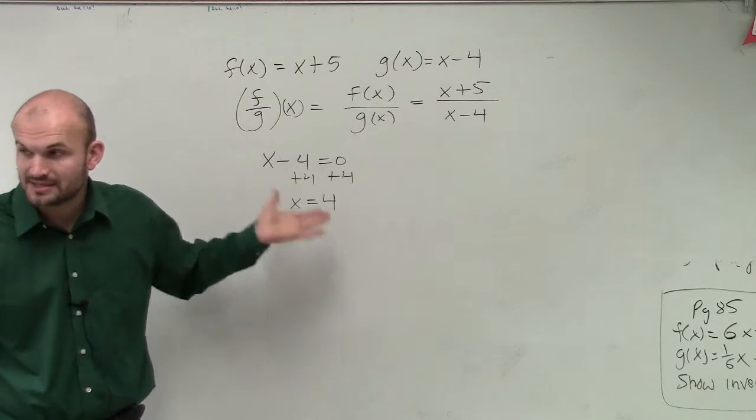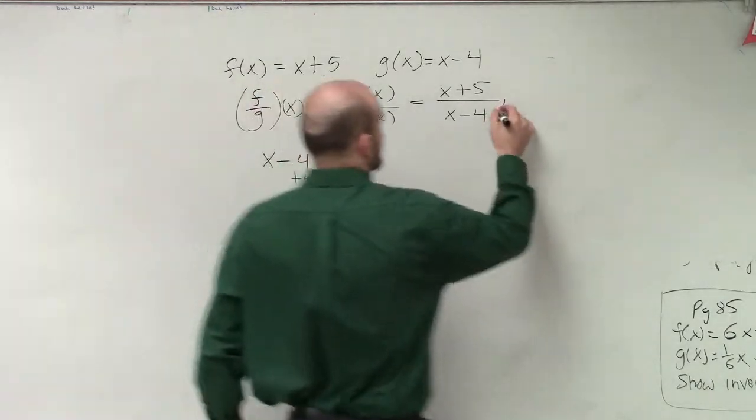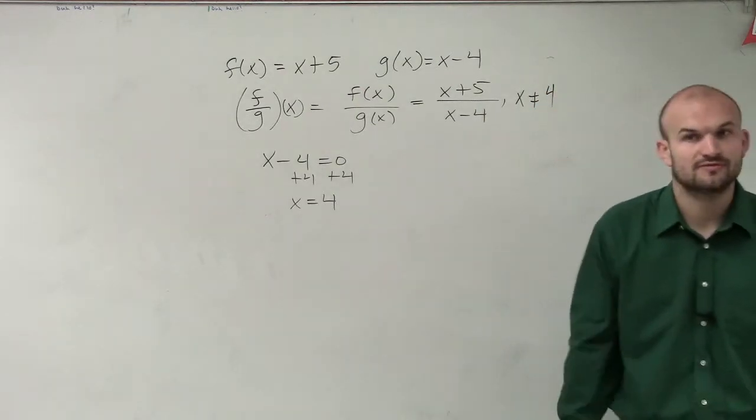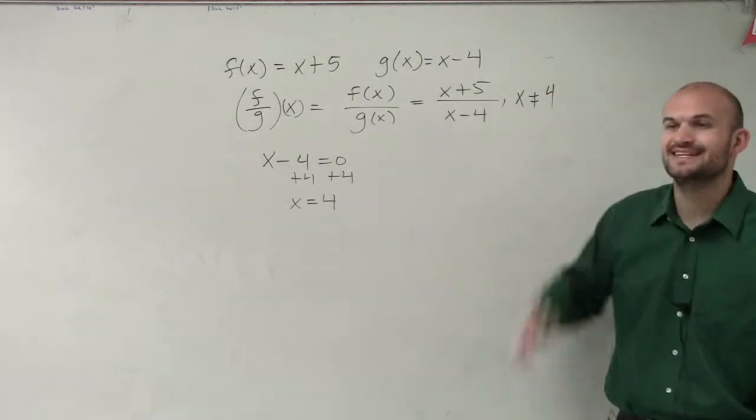So the values that make my denominator equal to 0 cannot be a part of the division of my two functions. So we say, x cannot equal 4.